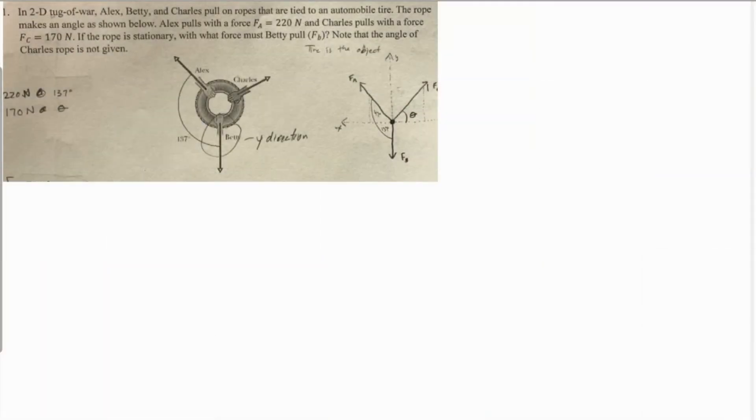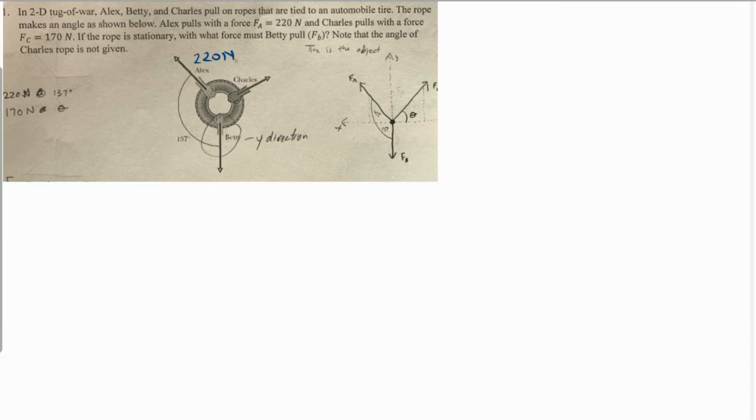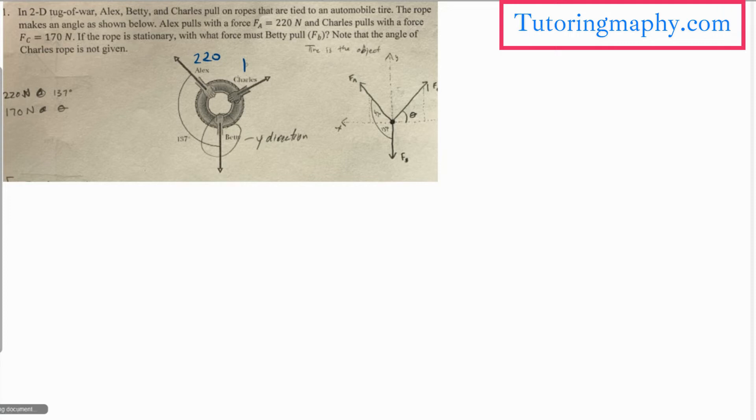In this question, in a 2D tug of war, Alex, Betty, and Charles pull on a rope tied to an automobile tire. The angle between Alex and Betty's force is 137 degrees. Alex's force value is 220 Newtons, let's omit the unit for now. Charles is 170, and this is unknown.